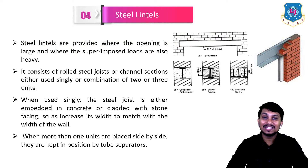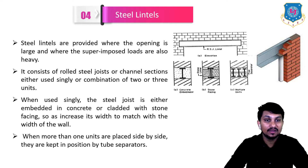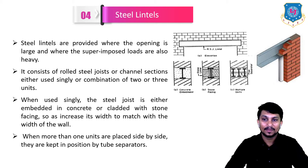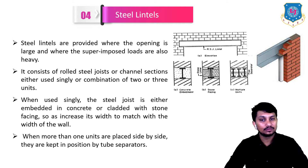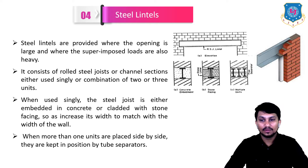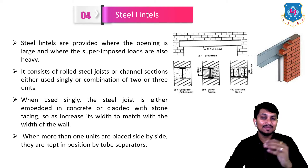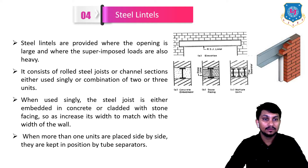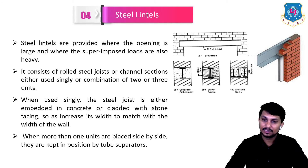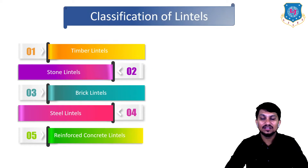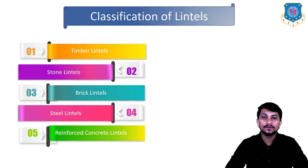Steel lintels are provided where the opening is large and the superimposed loads are very heavy. They consist of rolled steel joists or channel sections used either singly or in combination of two or three units. When used singly, the steel joist is either embedded in concrete or cladded with stone facing to match the width of the wall. When more than one unit is placed side by side, they are kept in position by tube separators, as clearly shown in the figure.